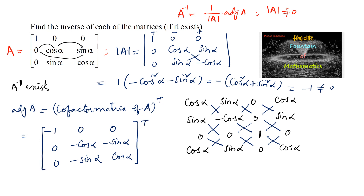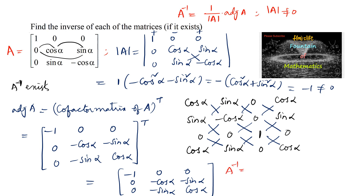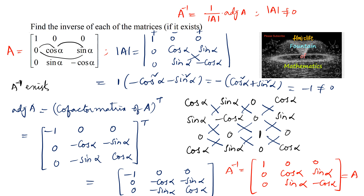Taking the transpose, the cofactor matrix becomes [[-1, 0, 0], [0, -cosα, -sinα], [0, -sinα, cosα]]. Therefore A inverse equals -1 times this matrix, so we can take the minus inside to get [[1, 0, 0], [0, cosα, sinα], [0, sinα, -cosα]], which is the same as the original matrix A. So A inverse equals A.